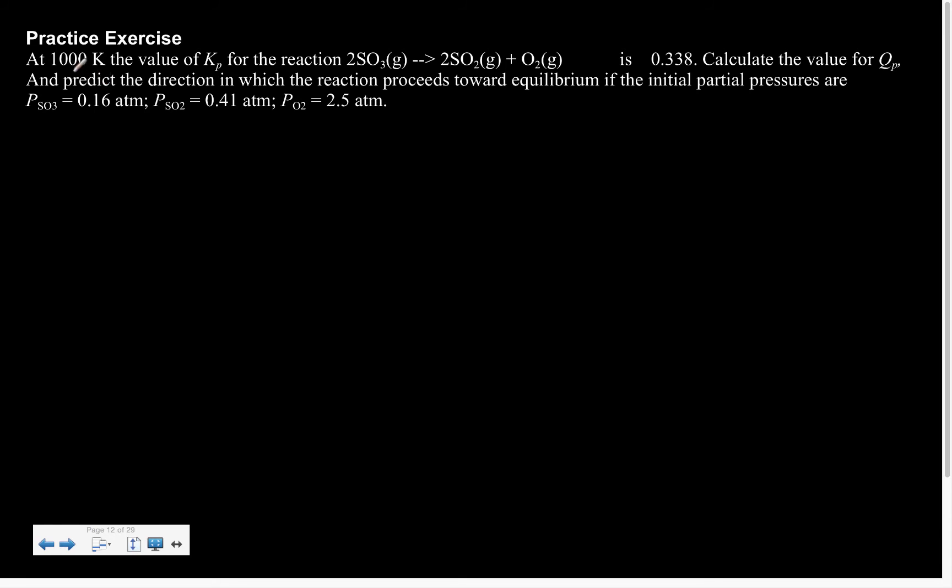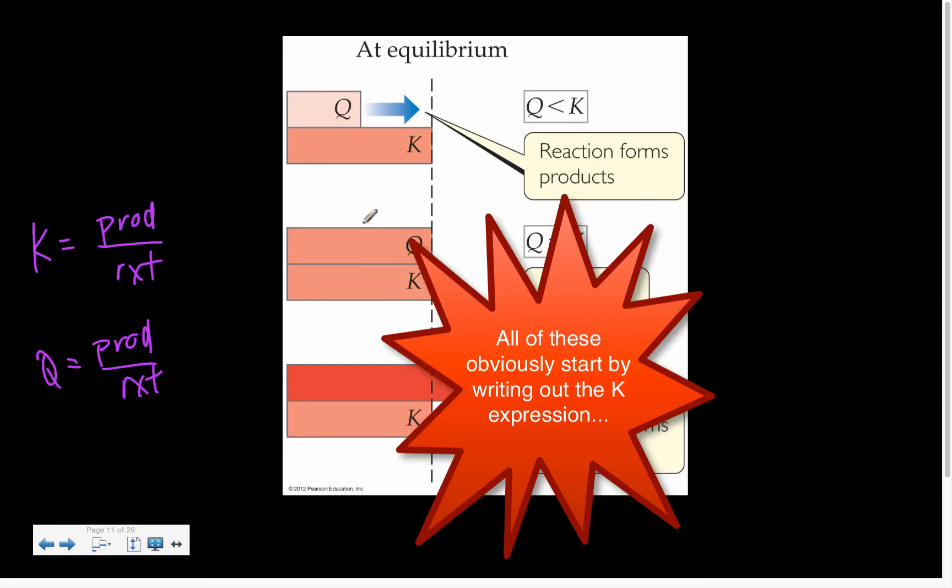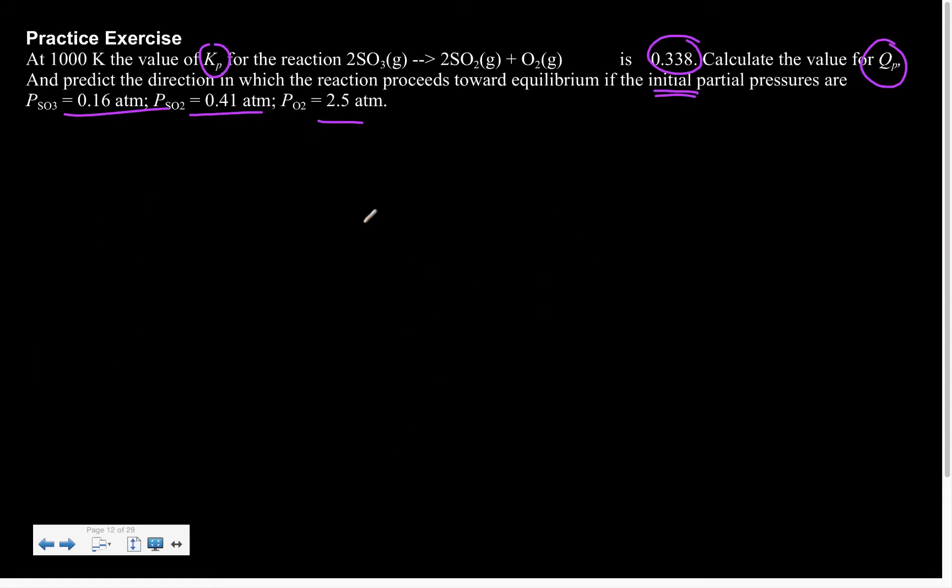All right, next up, practice problem. So here it says at 1000 K the value of Kp is 0.338. Calculate the value for Q and predict the direction if the initial partial pressure is... So initial is the keyword with all of this. So I would plug them into my Q expression, and then like I did on the previous page, I would compare my Q versus my K.